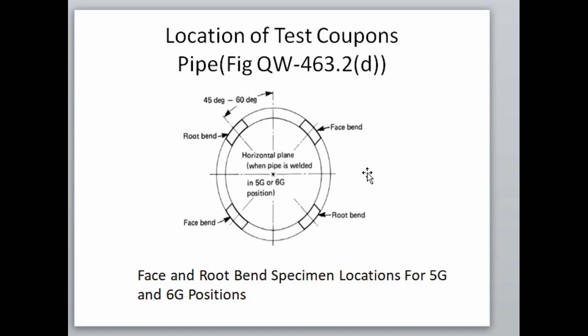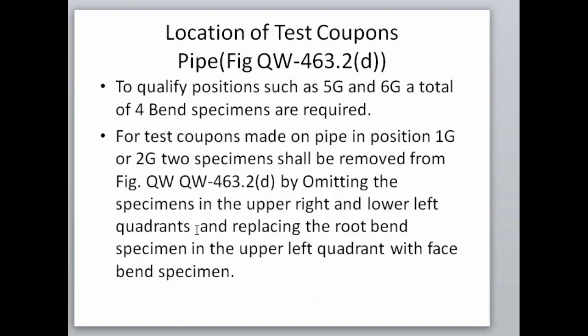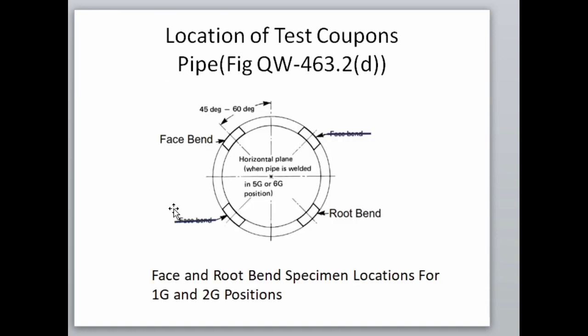Figure QW463.2D gives the location of the side and face bend specimens for positions 5G and 6G. From the figure, it is clear that unlike 1G and 2G positions, 5G and 6G require 4 bend specimens — that is 2 face and 2 root bends, or 4 side bends. For 1G and 2G positions, we omit the specimen in the upper right and lower left quadrants, and replace the root bend specimen in the upper left quadrant with a face bend. The location of the bend specimen for 1G and 2G positions looks like this.